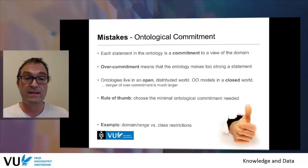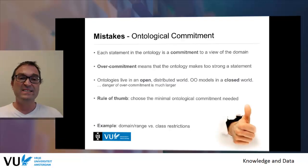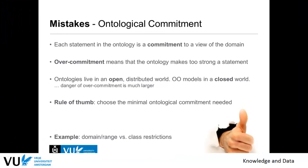One of the biggest mistakes is that you make an ontological commitment that is too strong. Every axiom you write down restricts all the possible interpretations of the domain, so each statement in the ontology makes a commitment to how the world is seen given your model. Over-commitment means the ontology makes too strong statements, making things you'd like to say impossible. Ontologies live in an open and distributed world, unlike object-oriented models in a closed world. The rule of thumb is to choose a minimal ontological commitment needed for your application.